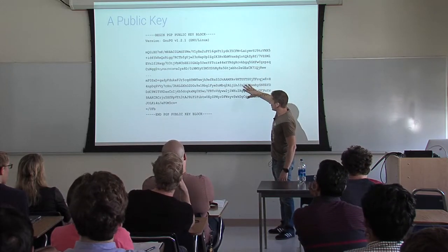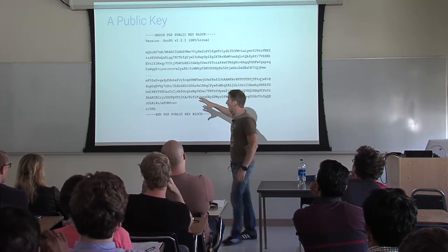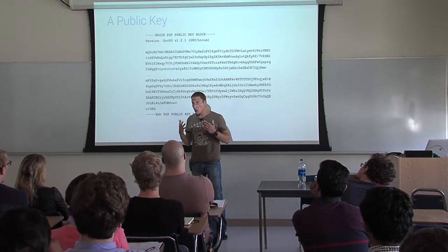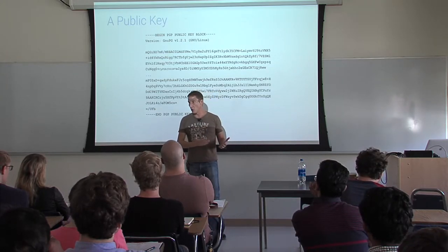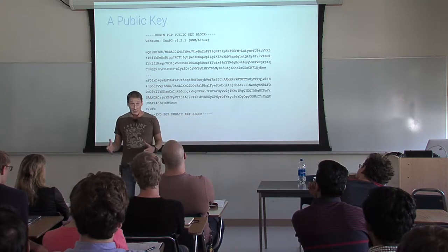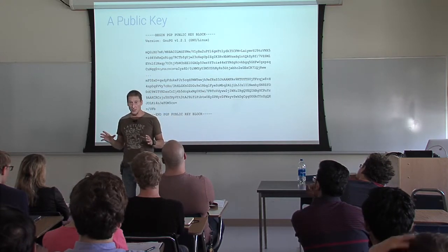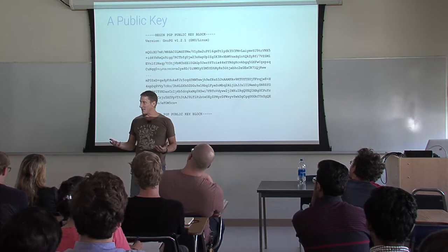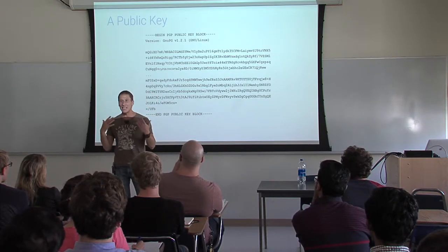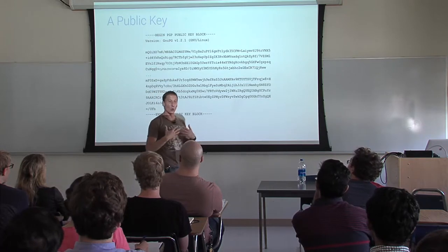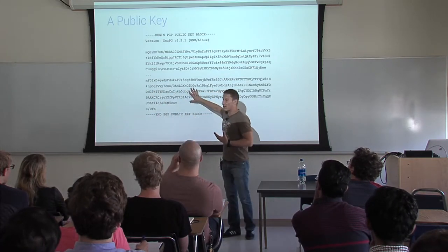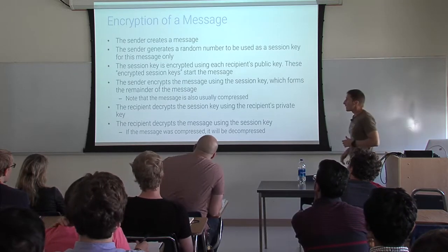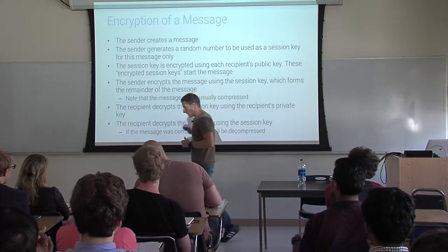At any time, you can use the --armor flag to generate a printable version of any key or message. For example, to generate a public key version in ASCII for your webpage, you export the key — by default you export your public key. This will create something you can put on your webpage. The keys are self-signed, so there is no concept of a Certification Authority here.